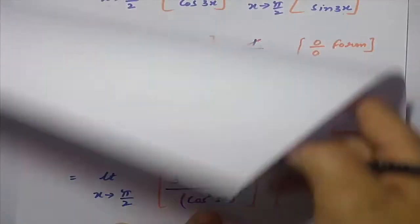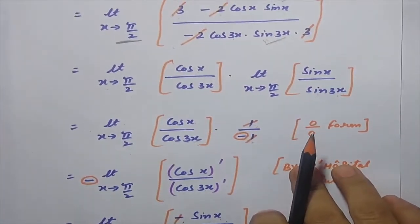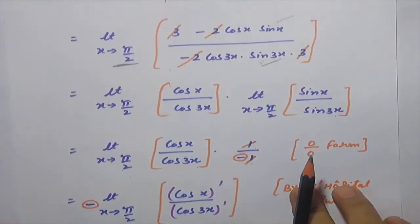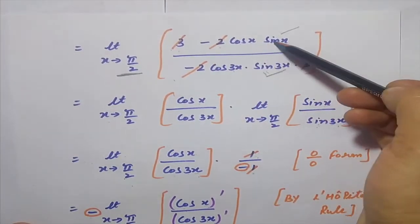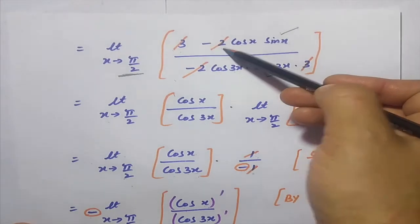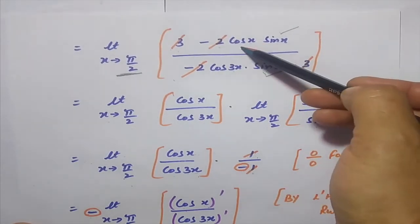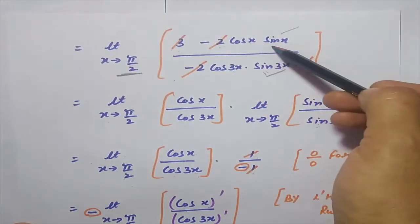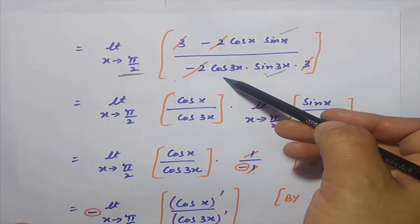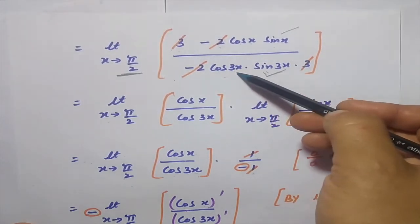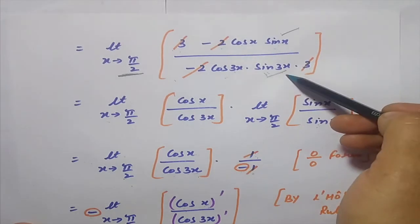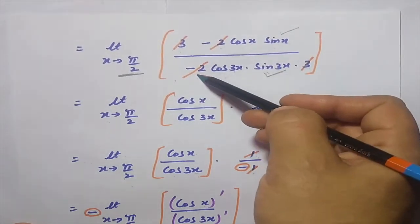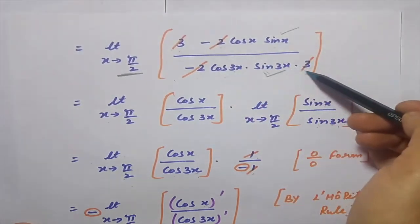After differentiating, the numerator gives 3 · (−2cos x · sinx) · ... and the cos x differentiation gives minus sin x. For the denominator, differentiating cos(3x) gives minus sin(3x) · 3, with factor minus 2 also present. The minus 2 and minus 2 cancel, and the 3 and 3 also cancel.